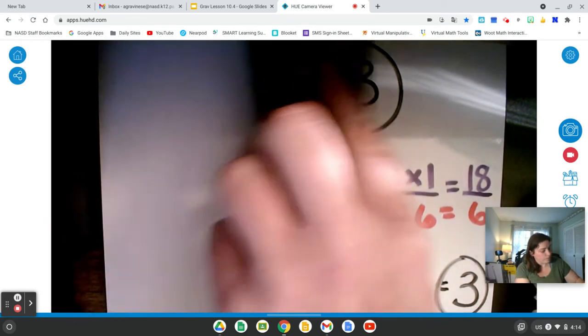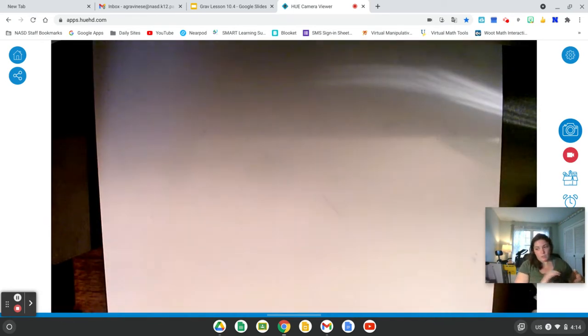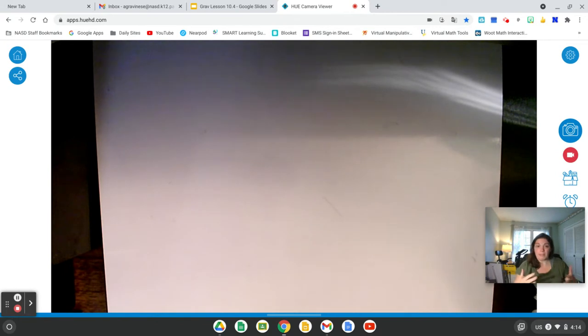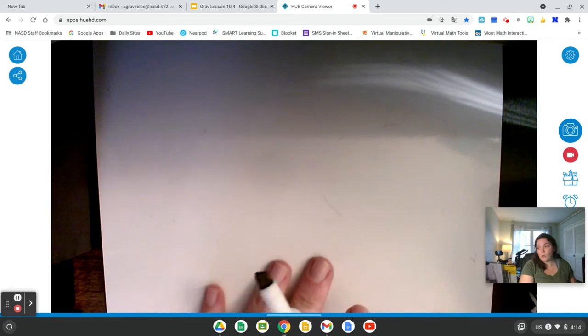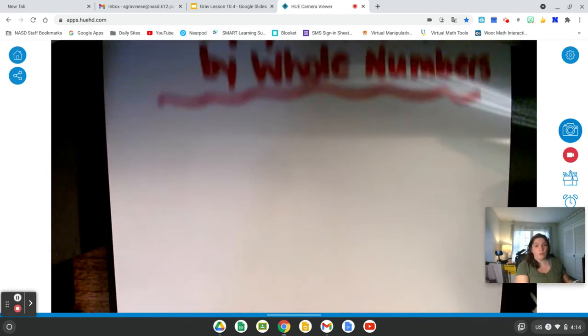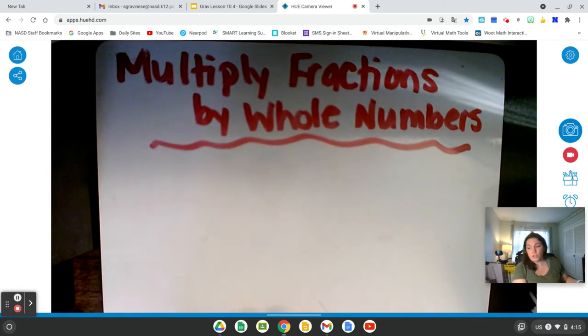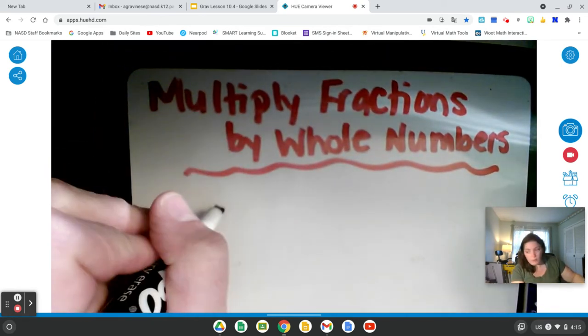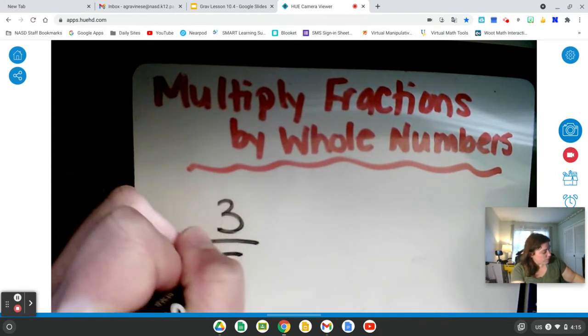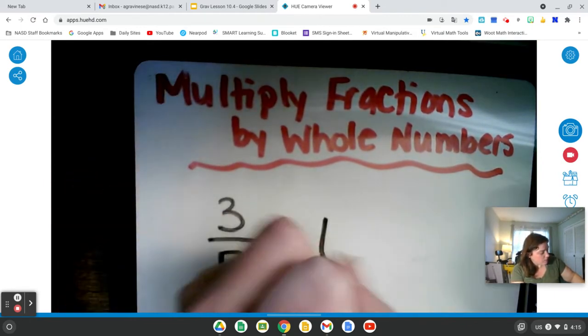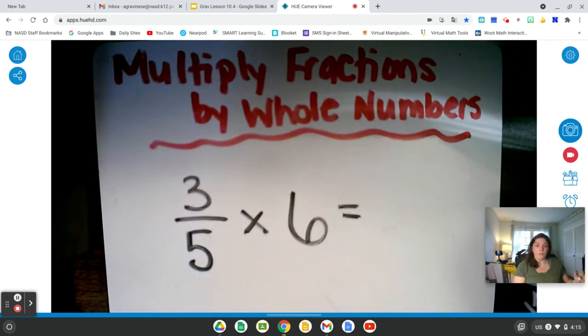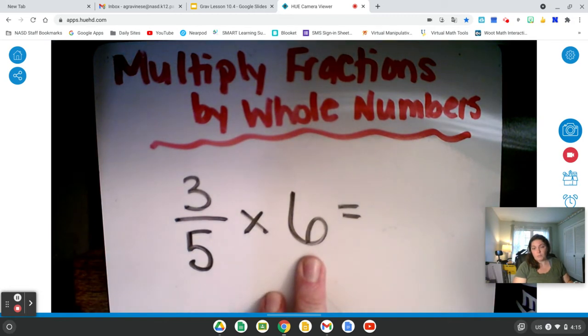Let's try another one. Sometimes when you multiply whole numbers by fractions, you end up getting a whole number for your answer. Other times, you could get a fraction or a mixed number. Regardless, you should always make sure your answer is in simplest form. Let's try 3 fifths times 6. Now you could think of this as 3 fifths of 6.